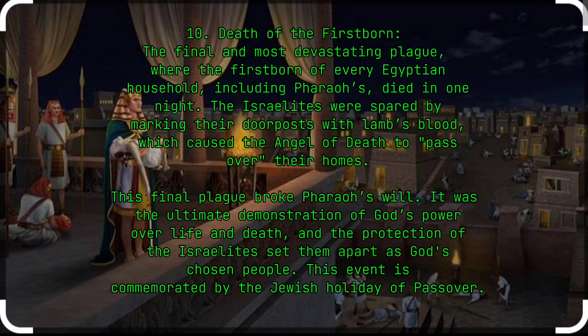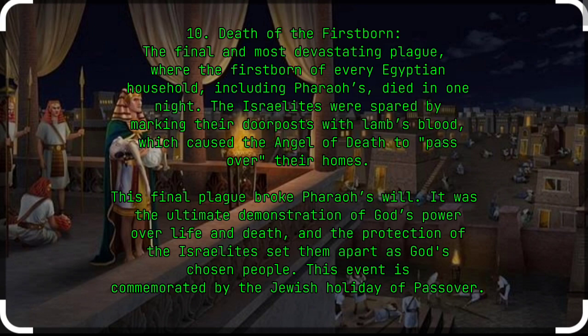10. Death of the firstborn. The final and most devastating plague — the firstborn of every Egyptian household, including Pharaoh's, died in one night. The Israelites were spared by marking their doorposts with lamb's blood, which caused the angel of death to pass over their homes. This final plague broke Pharaoh's will. It was the ultimate demonstration of God's power over life and death, and the protection of the Israelites set them apart as God's chosen people. This event is commemorated by the Jewish holiday of Passover.